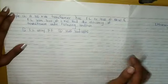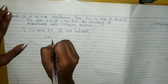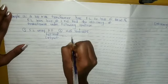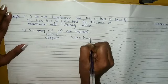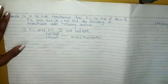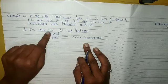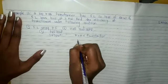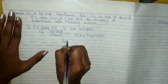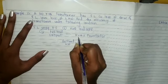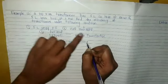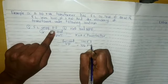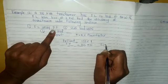The formula for full load output is kVA multiplied by power factor. They have given 100 kVA and unity power factor, which means 1. Substituting the values: full load output equals 100 into 1, which gives us 100 kW.